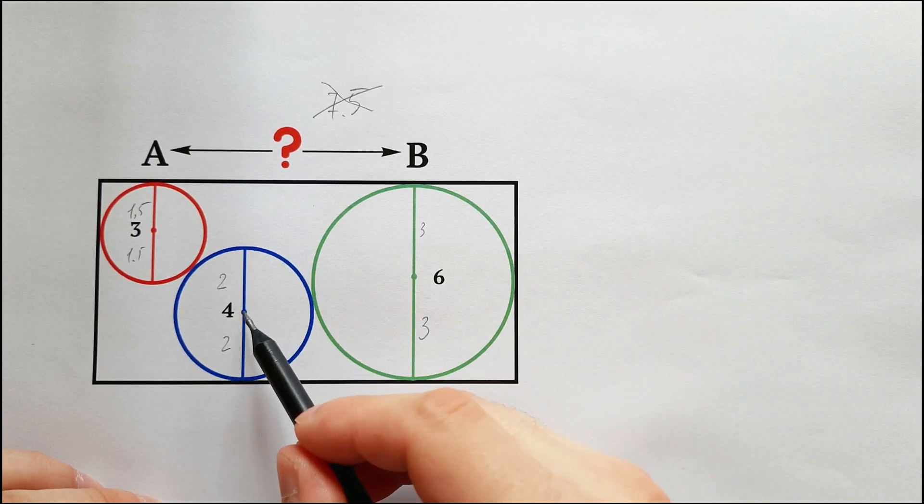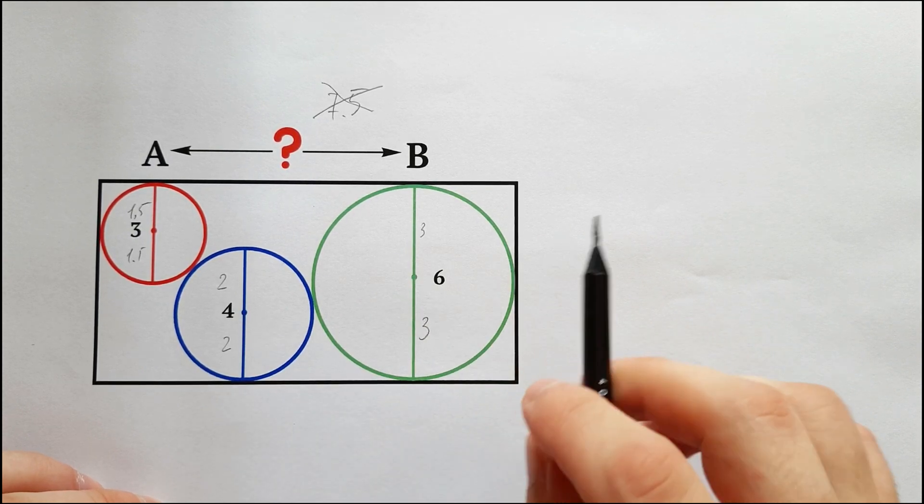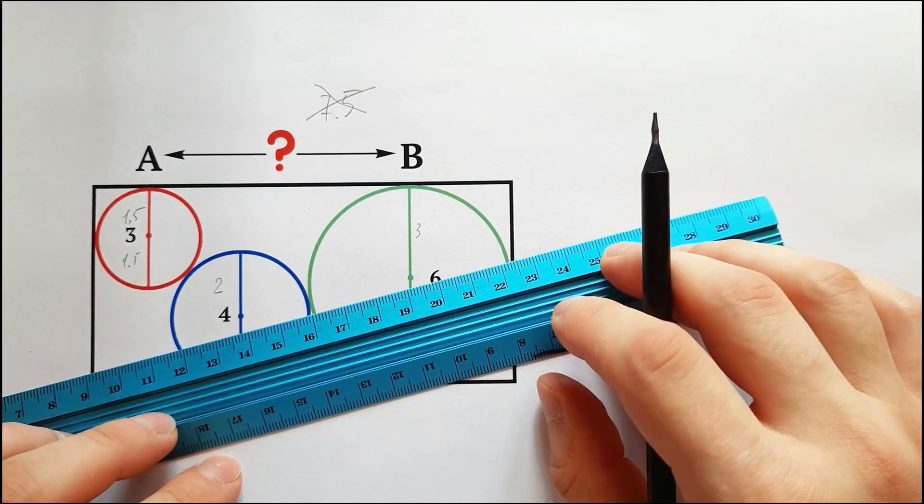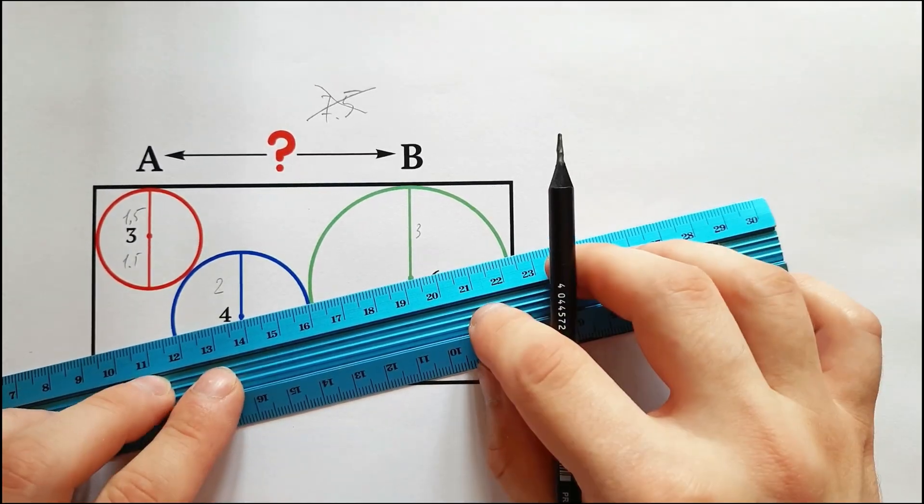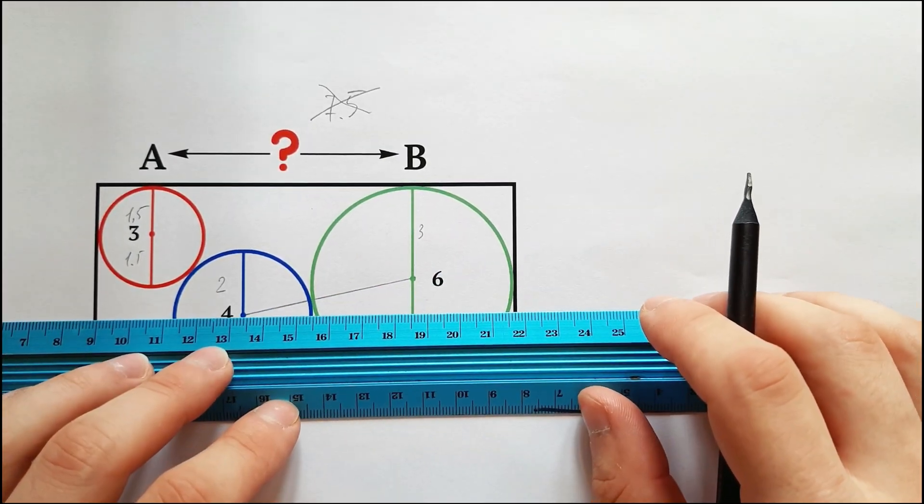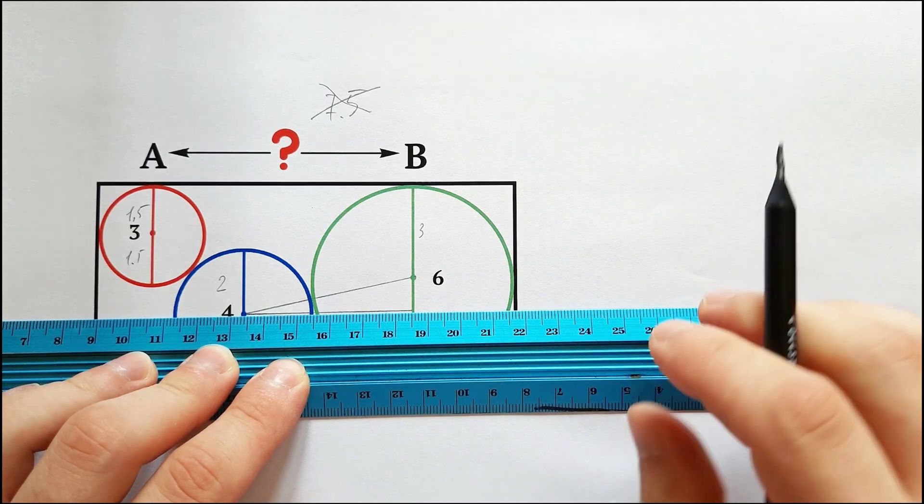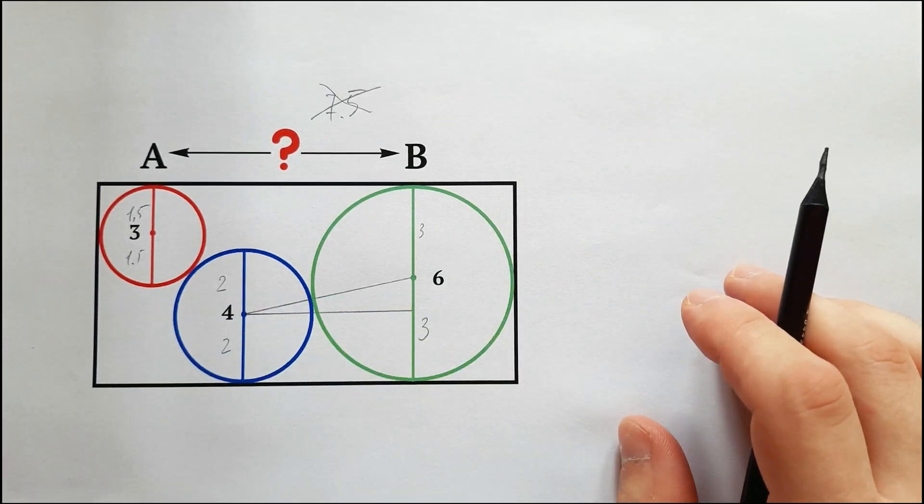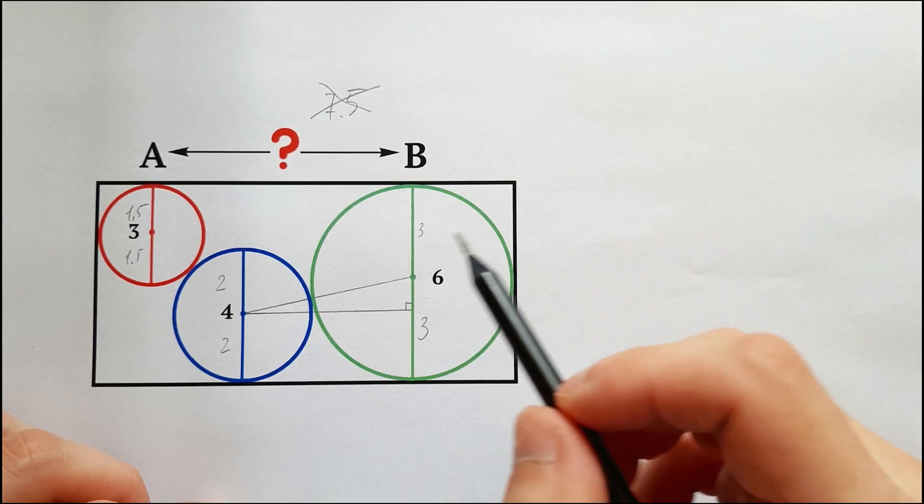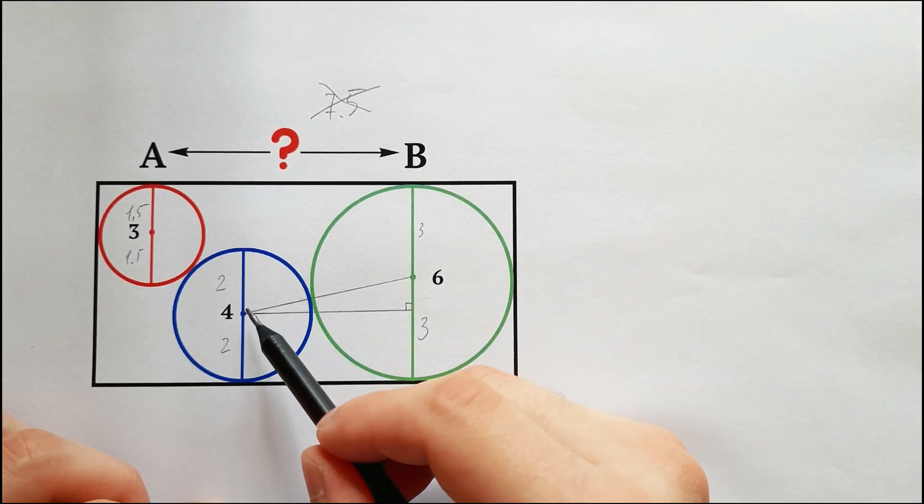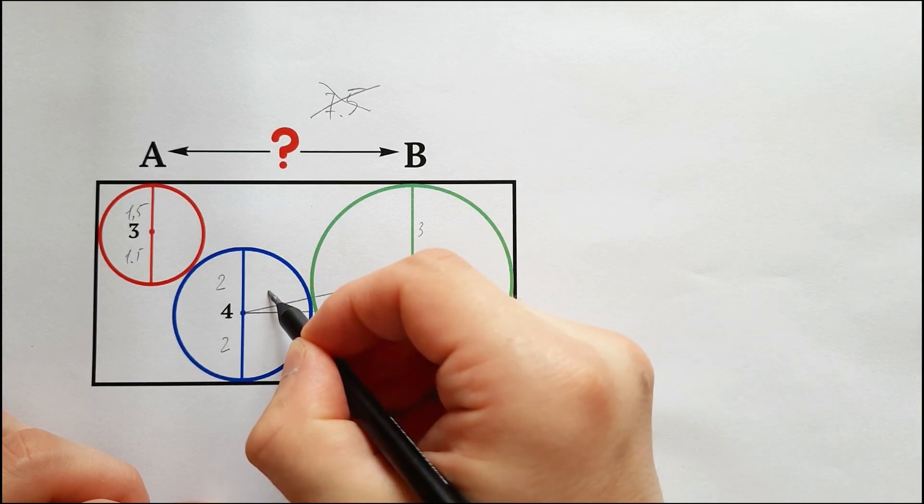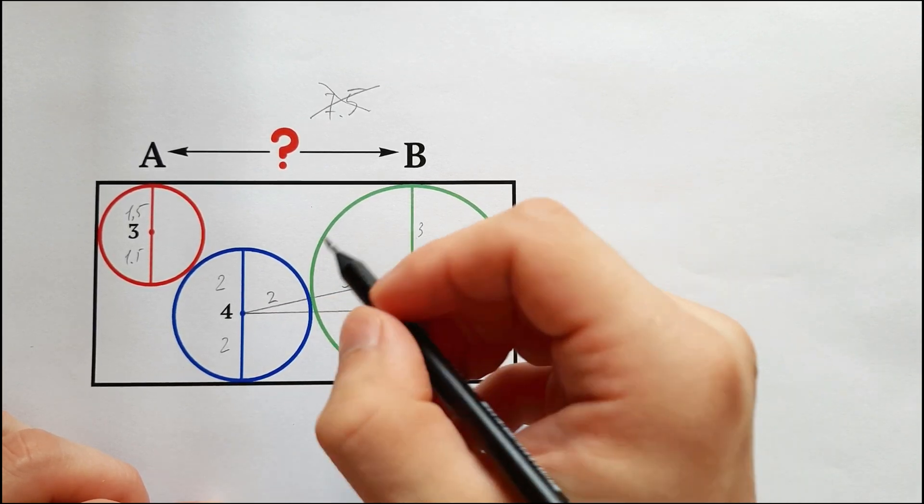Now let's connect the centers of the blue and green circles and draw a perpendicular to the right triangle. The hypotenuse of this right triangle is the sum of the radii of the blue and green circles, so it's 2 plus 3 equals 5.